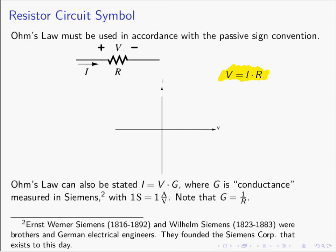Ohm's Law must be used in accordance with the passive sign convention. Notice that the current is directed into the positive terminal — Ohm's Law must be used with the passive sign convention or things will not work out correctly. R is a strictly positive number, so if R is positive and the current is going into the positive terminal, the current and the voltage will always have the same sign. If the current is positive, the voltage will be positive; if the current is negative, the voltage will be negative.